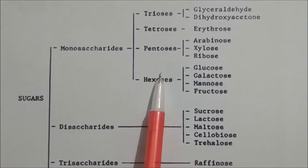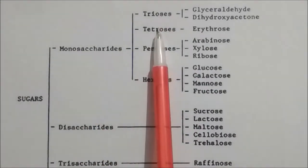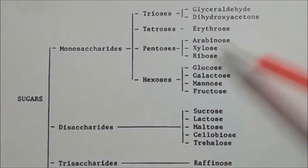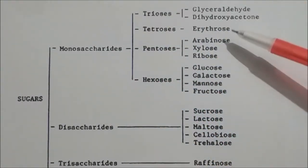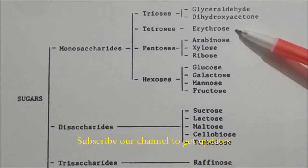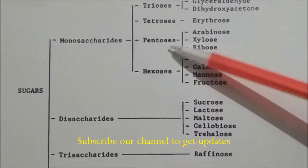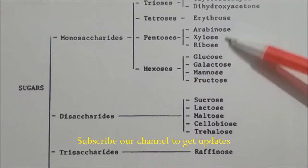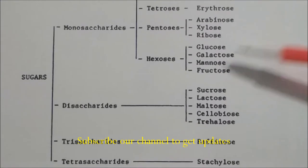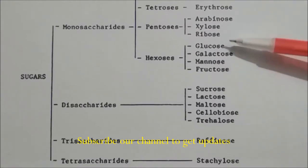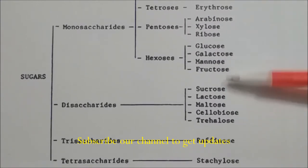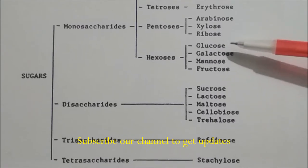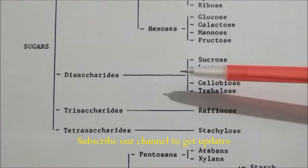In triose, we have glyceraldehyde (aldehytic sugar) and dihydroxyacetone (ketonic sugar). In pentose, examples are arabinose, xylose, and ribose. In hexose, we have different types of aldehytic as well as ketonic sugars; fructose is a ketonic sugar while the others are aldehytic sugars.